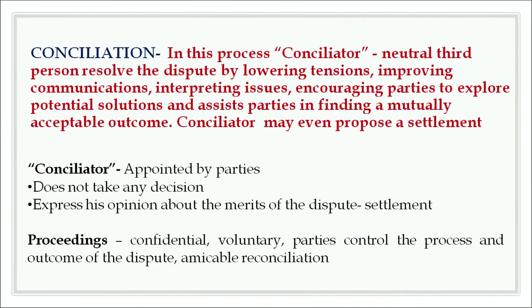The second process is conciliation. There is a third neutral person known as the conciliator who helps the parties resolve the dispute by lowering tension, improving communication, interpreting issues, encouraging parties to explore potential solutions, and assisting parties in finding a mutually acceptable outcome. The conciliator may even propose a settlement — this is the salient feature of conciliation. The conciliator may be appointed by the parties but does not take any decision; he is free to express his opinion about the merits of the dispute and may propose a settlement. The proceedings are absolutely confidential, voluntary in nature, and the parties have full control over the process and outcome.